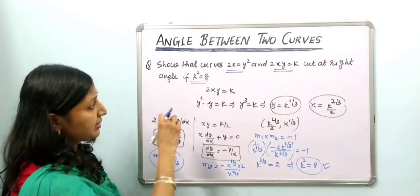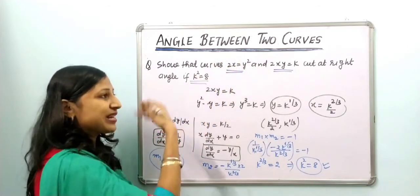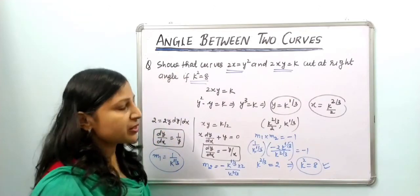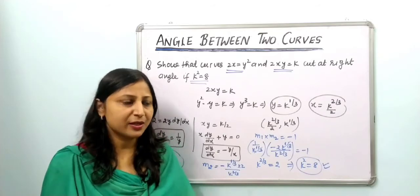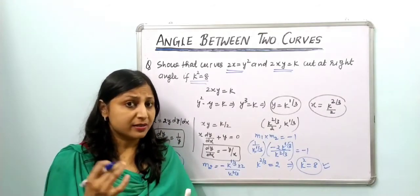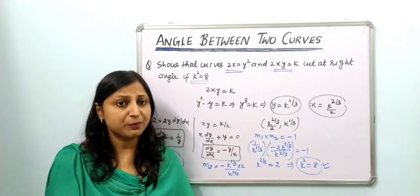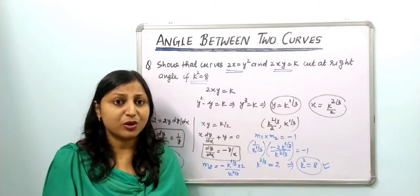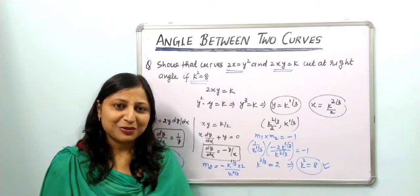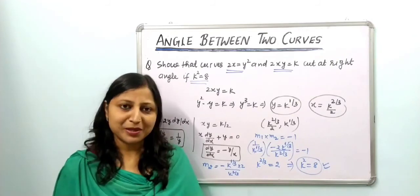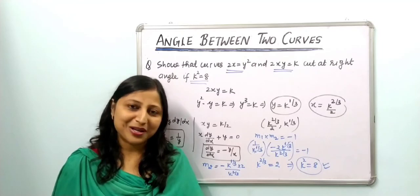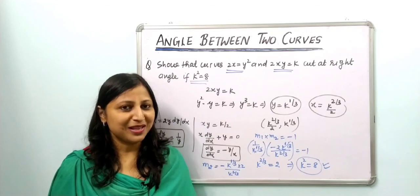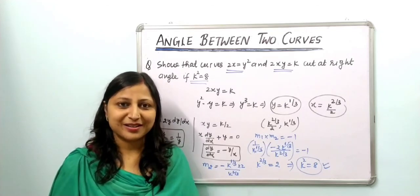This question could also be asked as: if these two curves cut at right angles, find the value of k. So there are two categories of questions on this topic: either you are given two curves and asked to find the angle between them, or a condition is given about the angle and you must find an unknown value. If you liked the video, please like, share, and comment. Subscribe to the channel if you haven't already. See you in the next lecture — take care, thank you.